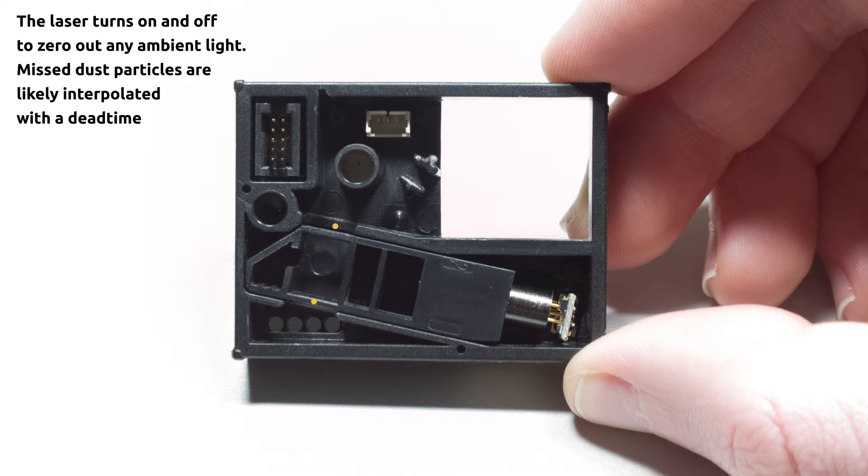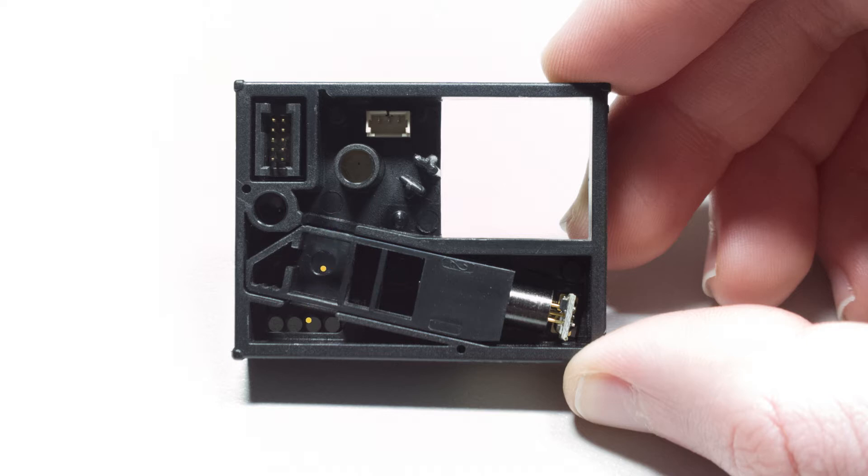And of course, the amount of light scattered by the dust particle is proportional to the size of the dust particle as well as its reflectance. I suspect this is the method that this unit uses in order to determine the particle sizes that we see in the data output.